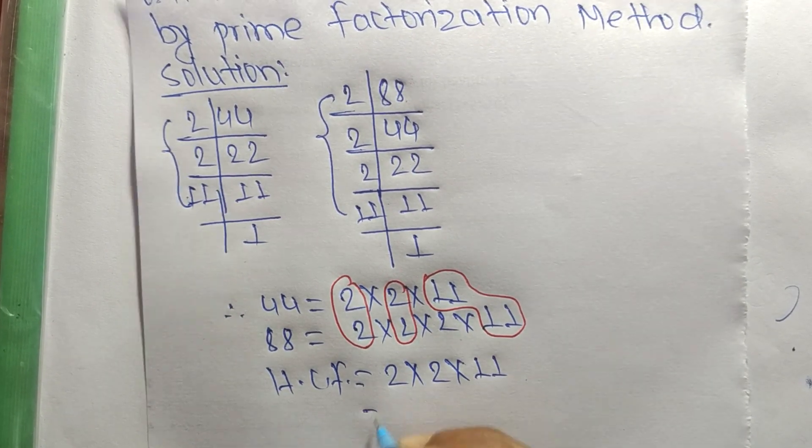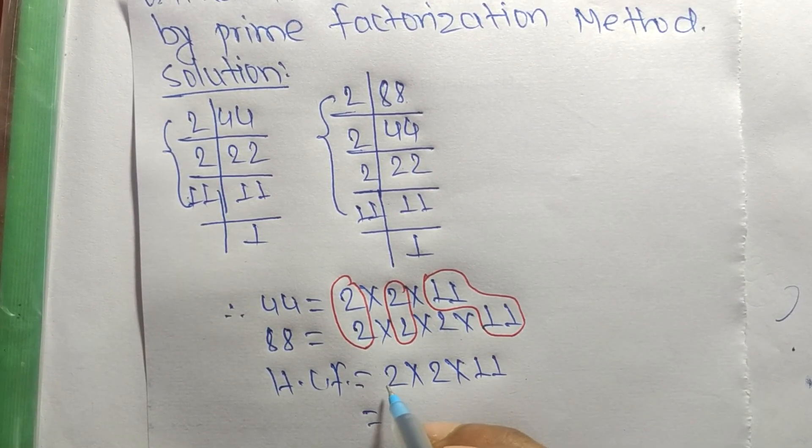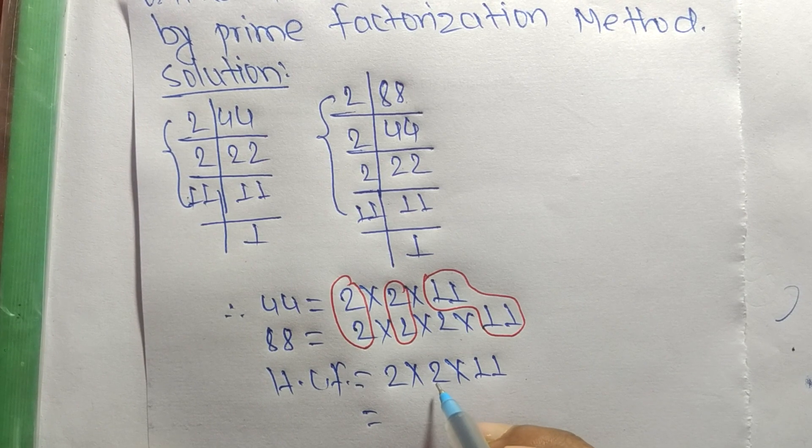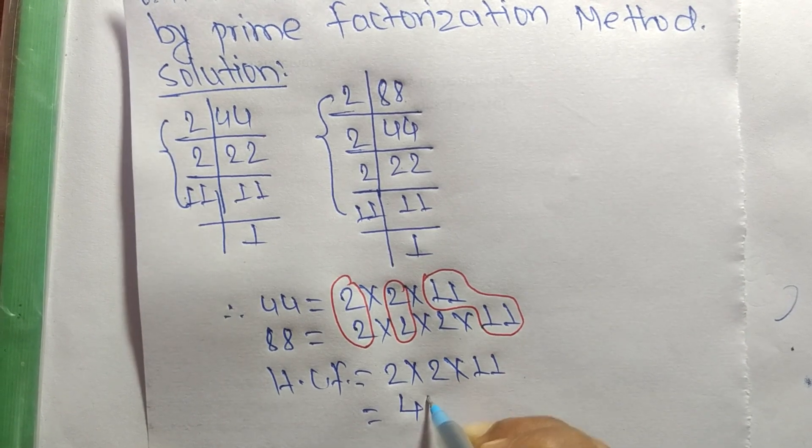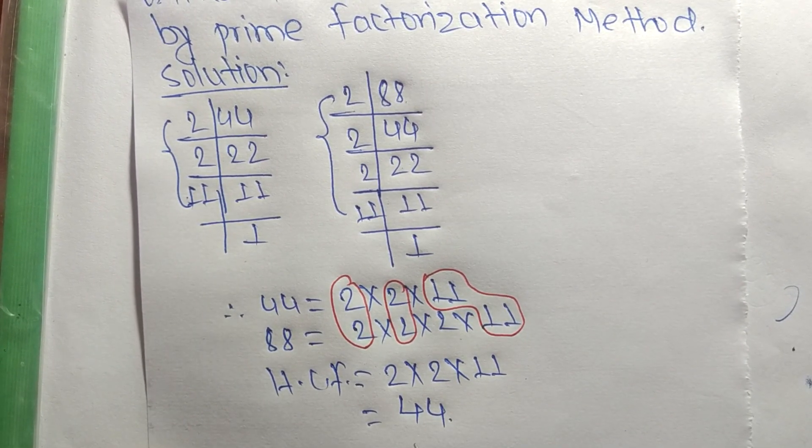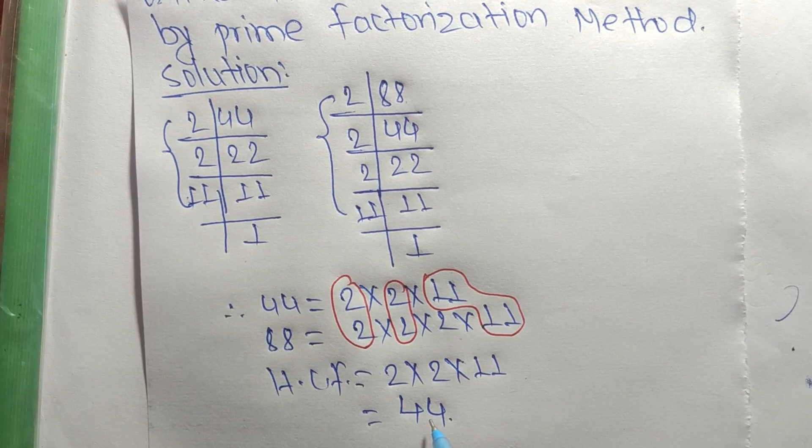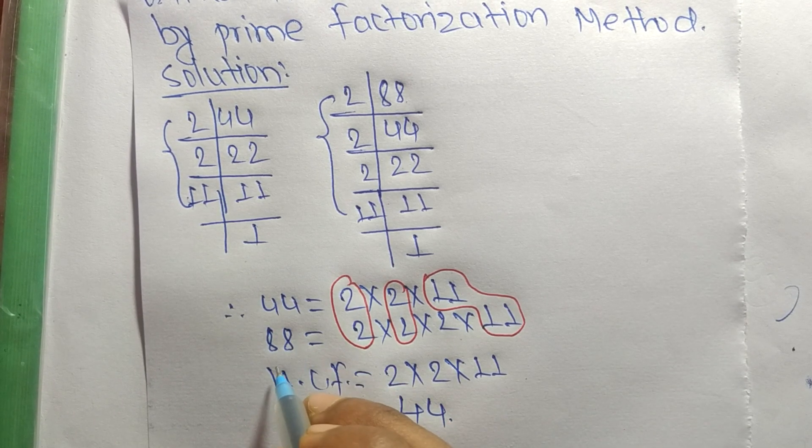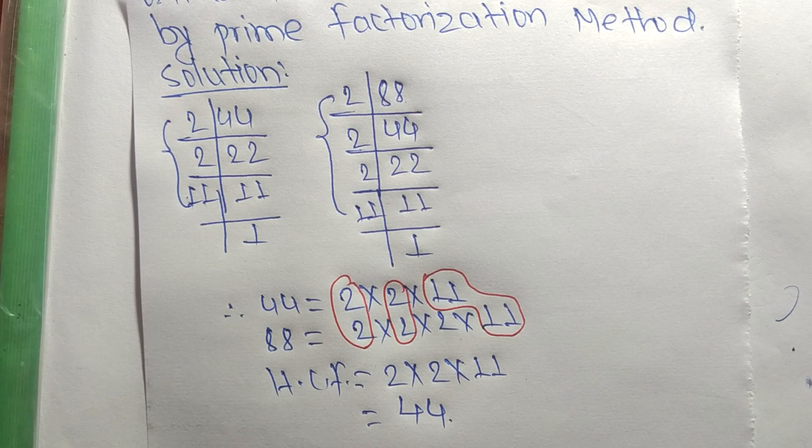The product is 2 times 2 equals 4, and 4 times 11 equals 44. So 44 is the HCF of 44 and 88. Thanks for watching.